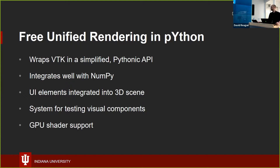Fury also has an integrated system for testing visual components — everything gets tested with continuous integration tools so we have some level of confidence things work as expected. Newly introduced is support for custom GPU shaders, which we are doing through VTK's recent support for custom GPU shaders. That's an active area of research and I'll show a demo shortly.